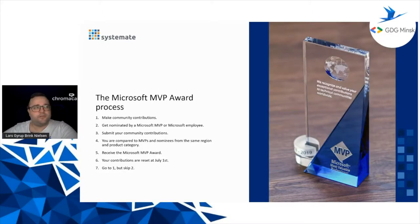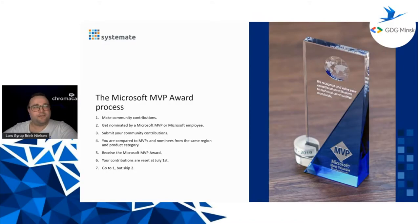Every year you have to do it all again. You don't have to get nominated again if you're already an MVP, but on the first of July all your contributions are reset as far as Microsoft is concerned. So you have to continue making community contributions to stay an MVP — you go back to step one but skip step two. It repeats itself in a loop.